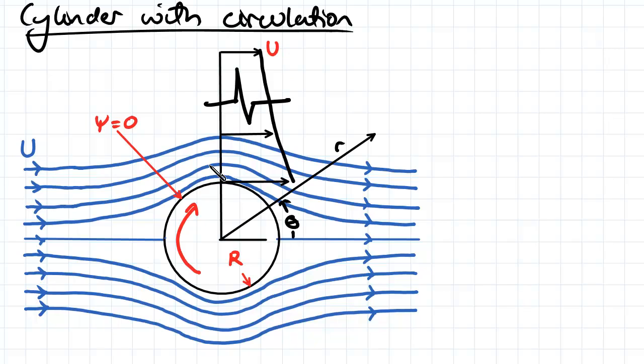So the first thing we want to do is, again, we want to derive equations for the stream function and the velocity potential. In this case here, we can actually take this cylinder, this rotating cylinder, as a free vortex. And that's how we derive our equations for the stream function and the velocity potential.